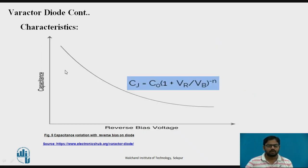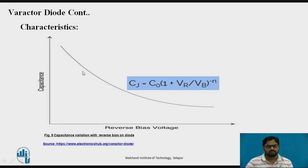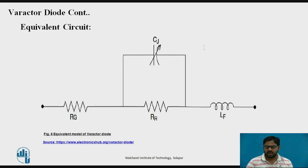In the Varactor Diode characteristics, capacitance is plotted versus reverse bias voltage. The capacitance is inversely proportional to the reverse bias voltage — this is the junction or transition capacitance, and the breakdown voltage is also indicated. The N value depends upon the doping grading: linear doping or abrupt graded doping. C₀ is the capacitance when no bias is applied. Notably, the decrease in capacitance is not linear but somewhat exponential as reverse bias voltage increases.